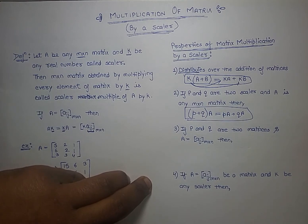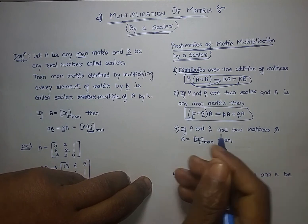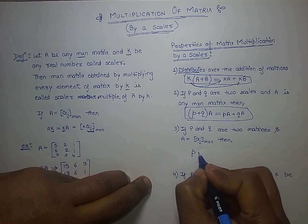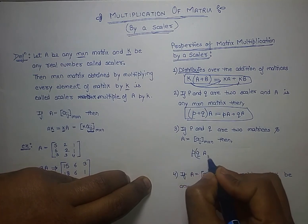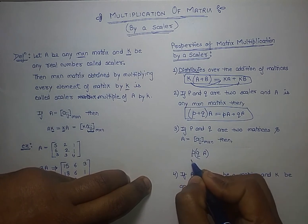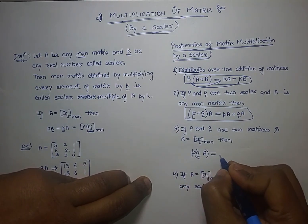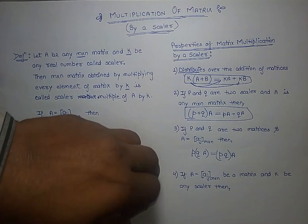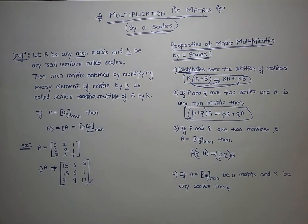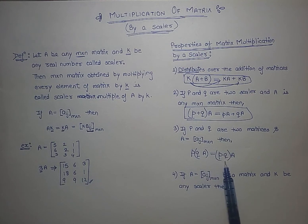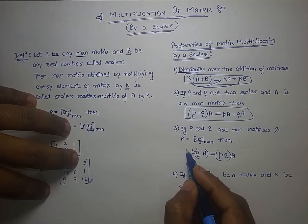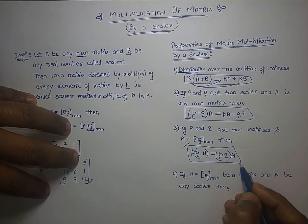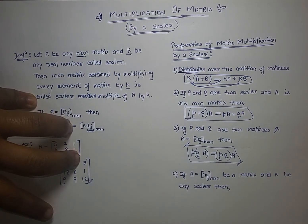The third property is: if p and q are two scalars and A is a matrix of size m by n, then (pq)A = p(qA). It doesn't matter whether you multiply the two scalar numbers together first and then multiply with the matrix, or multiply one scalar with the matrix first — the result is the same.